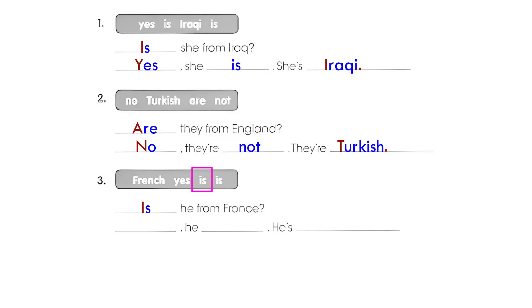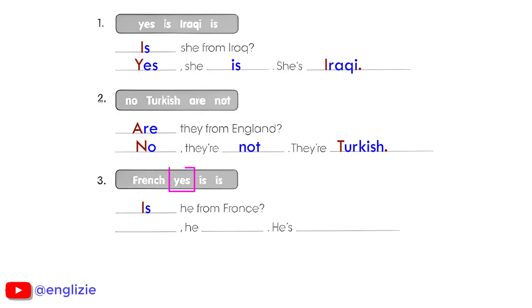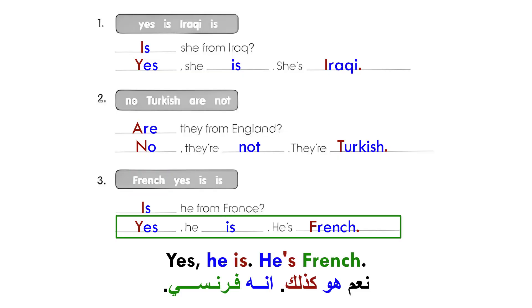3. Is he from France? هل هو من فرنسا؟ Yes, he is. He's French. نعم، هو كذلك. إنه فرنسي.